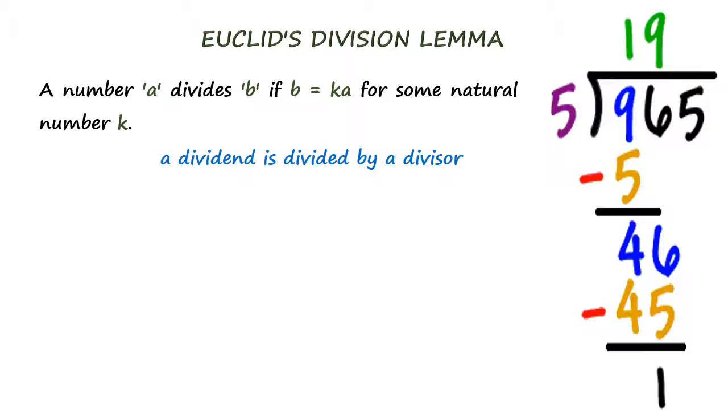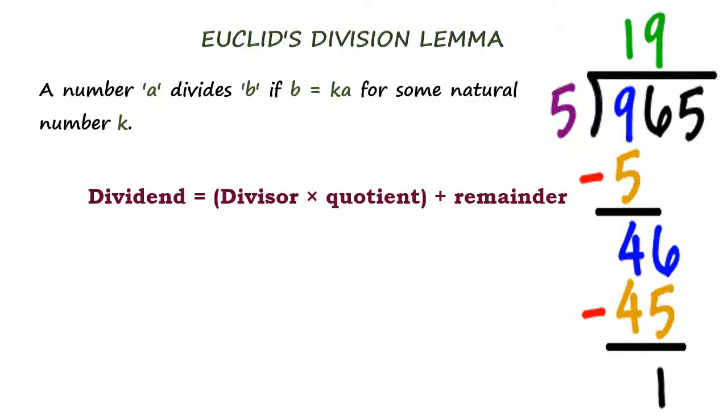Whenever a dividend is divided by a divisor, we get the corresponding quotient and remainder. These four terms are related as: Dividend equals the product of divisor and quotient to which the remainder is added. This relation is called Euclid's division lemma.